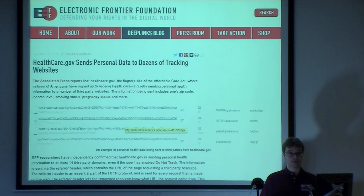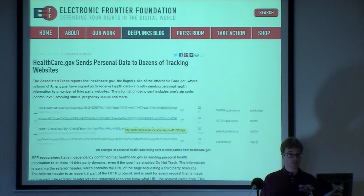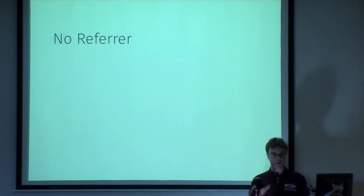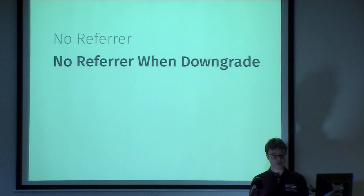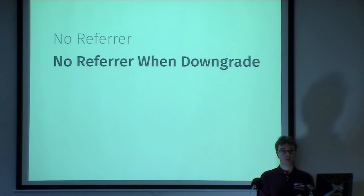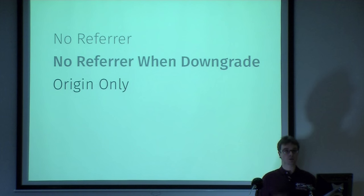This actually happened on healthcare.gov — they were leaking their referrers to dozens of trackers embedded on their pages. The Referrer Policy is here to fix that. It allows you to control on your page what the default referrer will be. It can be no-referrer, which is great — you tell the browser not to send any referrer to anybody loaded from that page. Or 'no-referrer-when-downgrade,' which is the default — you send a full referrer all the time except when the page is on HTTPS and the resource you're loading is over HTTP. Or you can send origin only, which strips the query string parameters and path, sending just the hostname.